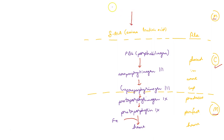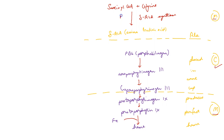This occurs by condensation of succinyl-CoA with glycine in the presence of enzyme delta-ALA synthase. This enzyme requires a cofactor which is pyridoxal phosphate. This is the rate-limiting step in heme synthesis.